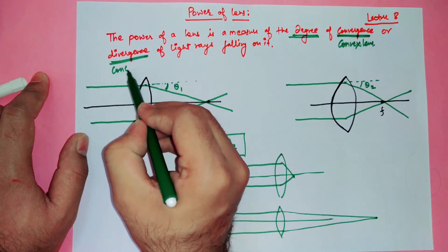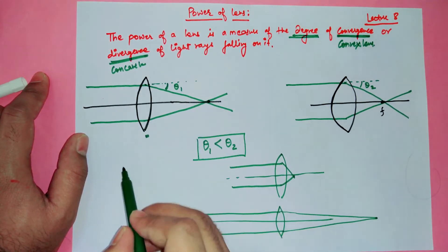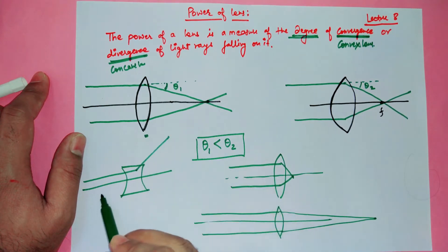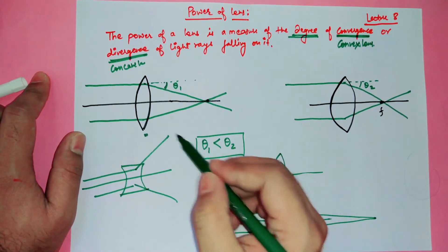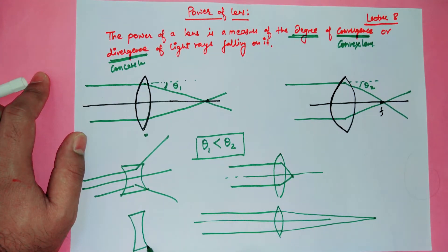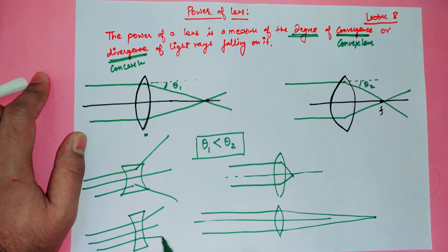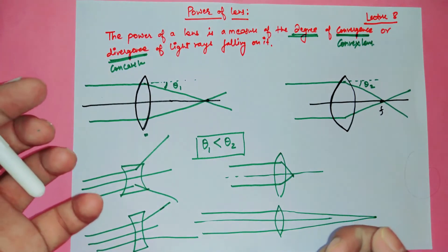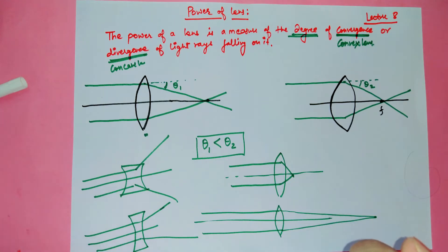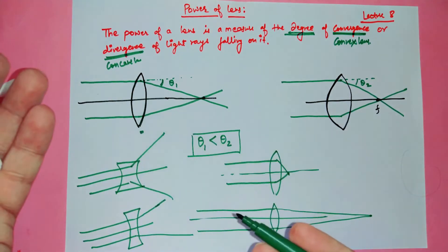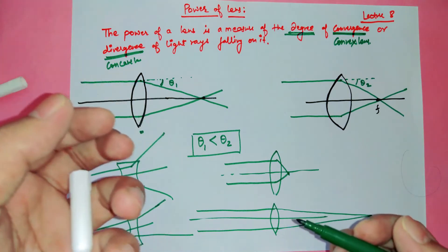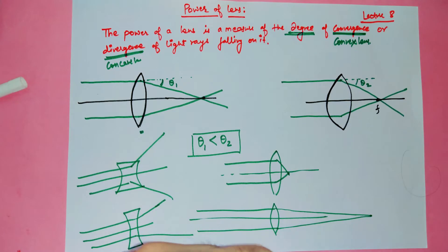For a convex lens, power is a measure of the degree of convergence. Similarly for a concave lens, power is a measure of the degree of divergence. If a concave lens diverges light with a very sharp angle, its power is high. If it diverges with a lower angle, its power is low.